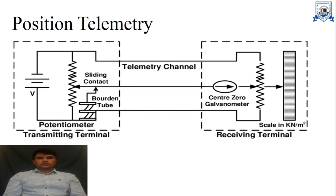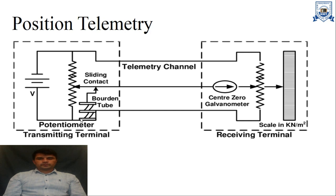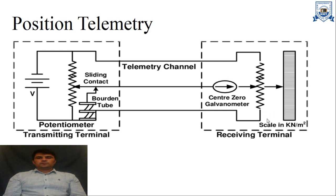Here is the block diagram of position telemetry. We have a potentiometer at the transmitting terminal and again a potentiometer at the receiving terminal. In this case we measure pressure because we use a Bourdon tube. As the pressure increases or decreases, the Bourdon tube shape changes, and as its shape changes, the slider or wiper connected to it also moves, changing the signal at the receiving end as well.